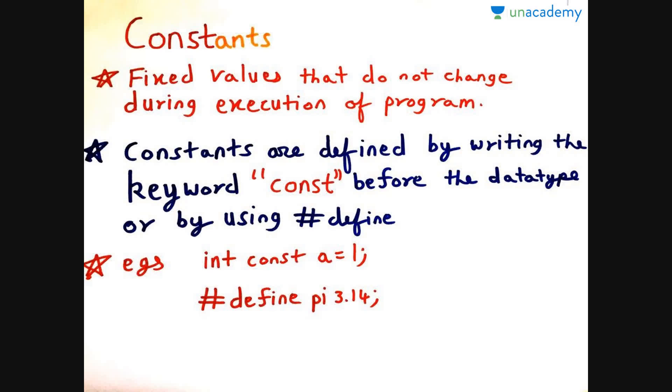Now let us move to the term constants. Constants, just as its name suggests, it is constant. It's a fixed value, it cannot be changed. Constants are the fixed values that do not change during the execution of the program. As I have written const in the red, it has a different meaning. Constants are defined by writing the keyword const. Now const is a keyword, so remember it cannot be used as a variable.